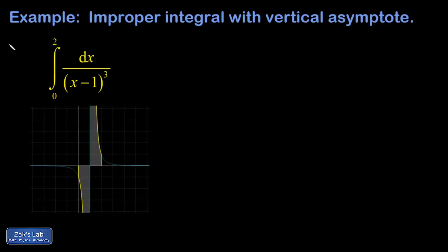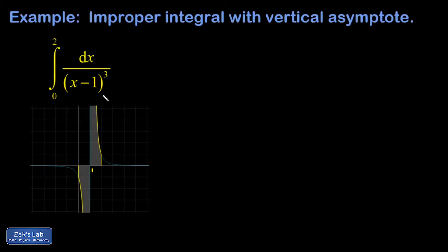This improper integral brings up some really interesting issues. First, it's improper because I have a vertical asymptote on the interval of integration, so this function is spiking to negative infinity and positive infinity when I cross over x equals 1, which is my problematic point.